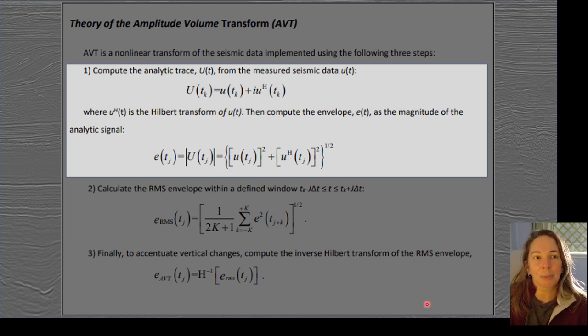And so the first thing that you do for amplitude volume transform is you calculate the analytic trace, which is combining the original seismic data with the Hilbert transform. So adding in that 90 degree phase shift.